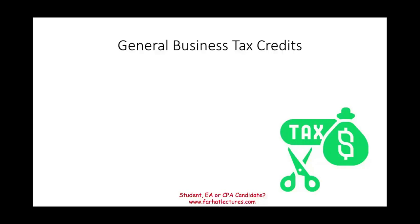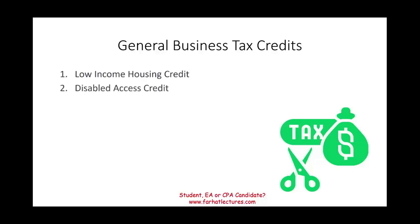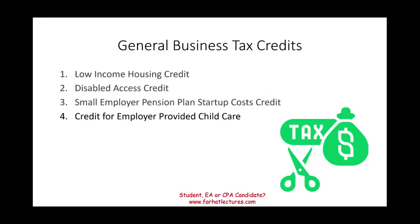Hello and welcome to this session in which we will keep working with the general business tax credits. In this session I will cover several remaining business tax credits — most common ones you might see on the CPA exam or in your accounting course: the low income housing credit, disabled access credit, small employer pension startup cost credit, credit for employer-provided child care, and employer-provided family and medical leave.